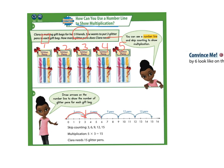So we jump another three pens. And another, there's three friends, four friends, five friends. She needs a total of 15 pens. It's just like skip counting. 3, 6, 9, 12, 15. Skip counting by threes. 5 times 3 equals 15. So Clara needs 15 glitter pens.